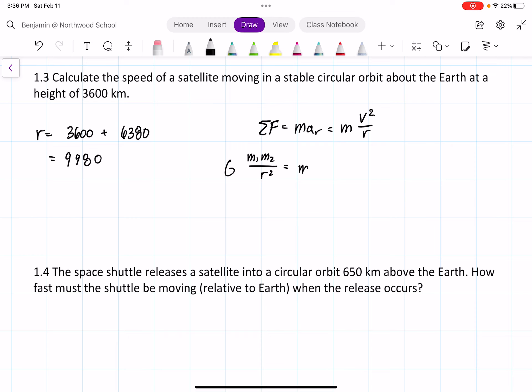This equals mv² over r. What we're trying to find is v, so we can cancel an r and cancel m₁, which is the mass of the satellite. We already have v² isolated, so we can take the square root, giving us v equals the square root of Gm₂ over r.